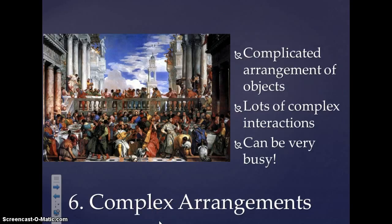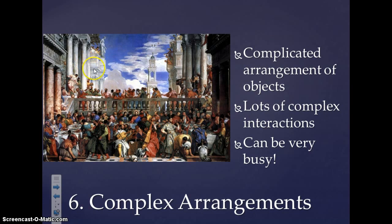Number six is complex arrangements. In the painting we're looking at, there is a lot going on — people moving, talking, shaking hands, pouring things — showing a lot of complexity and thought in the creation of these paintings. We can also see other characteristics at work: classicism in the ancient architecture, and perspective with buildings getting smaller in the background compared to the larger people in the foreground. Complex arrangement means the artwork is very busy with a lot of detail.